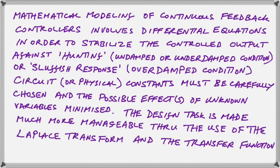A mathematical model of a continuous feedback controller will involve differential equations, and this is necessary to stabilize the control output against hunting. Hunting means that we send the output in one direction, it goes past the point that we want it to go, and the error control brings it back — but it brings it back too far, so then it has to turn around and move in the other direction. So hunting is basically oscillation around a desired point, and this would happen in an undamped or underdamped system.